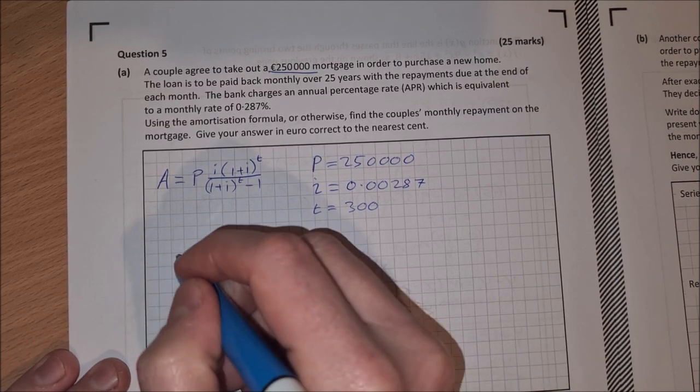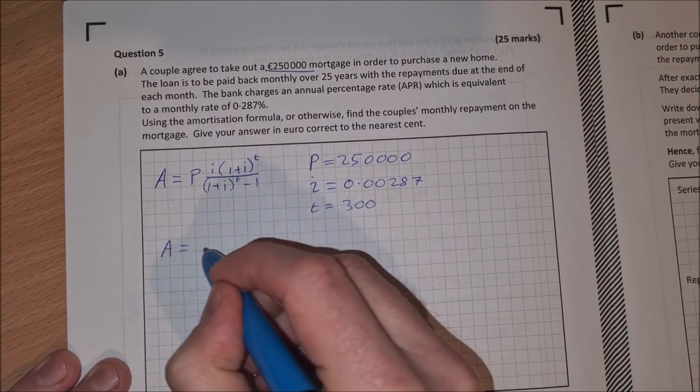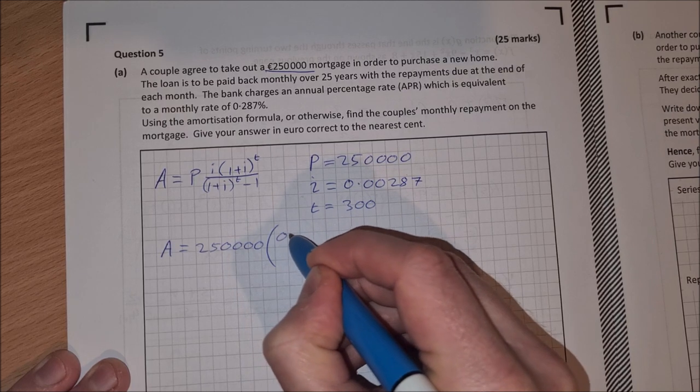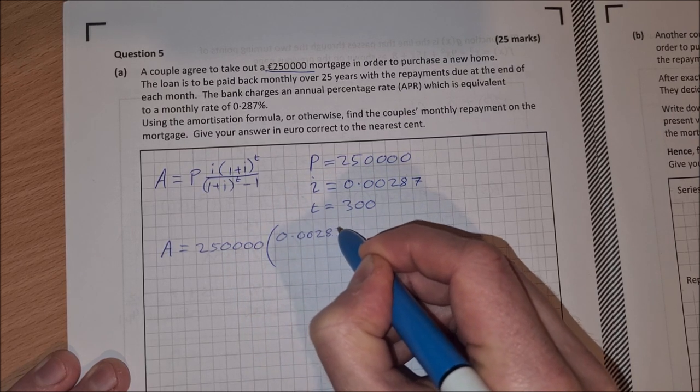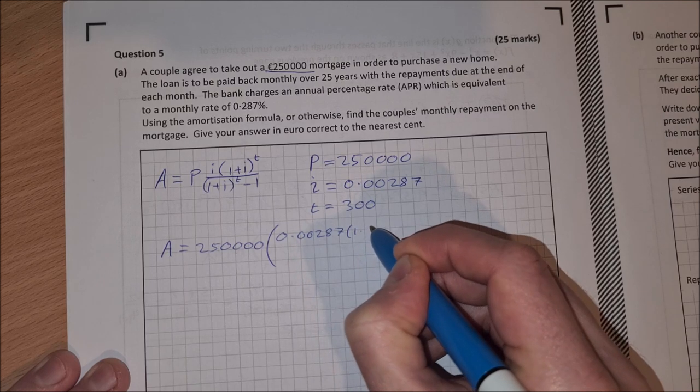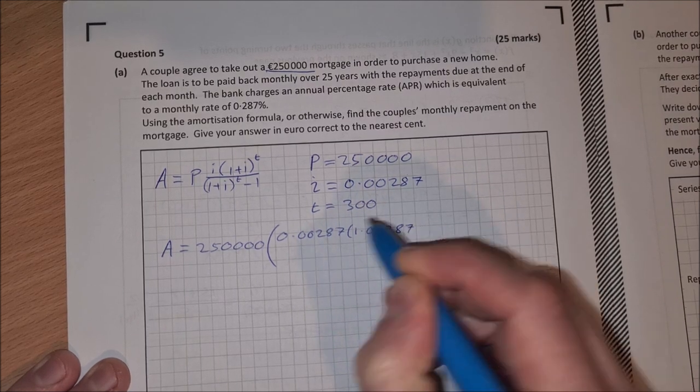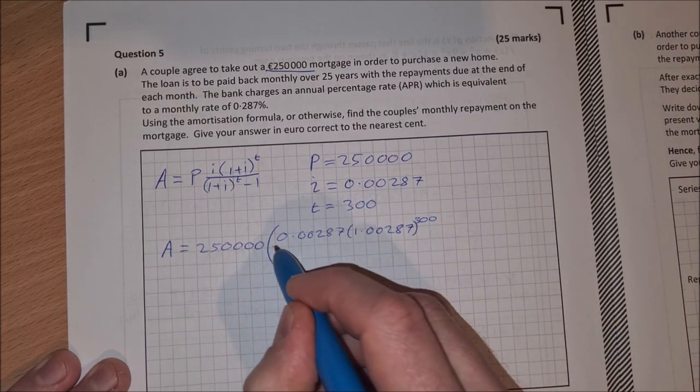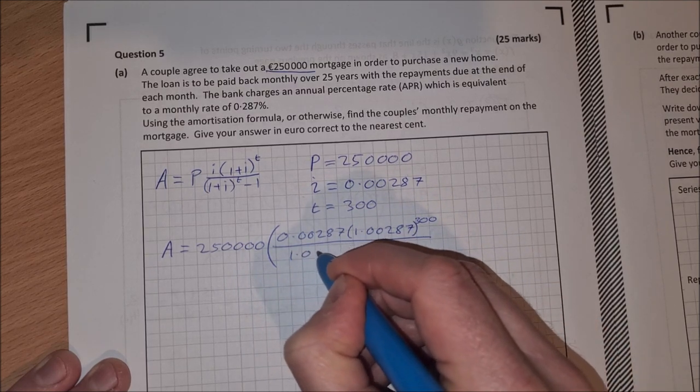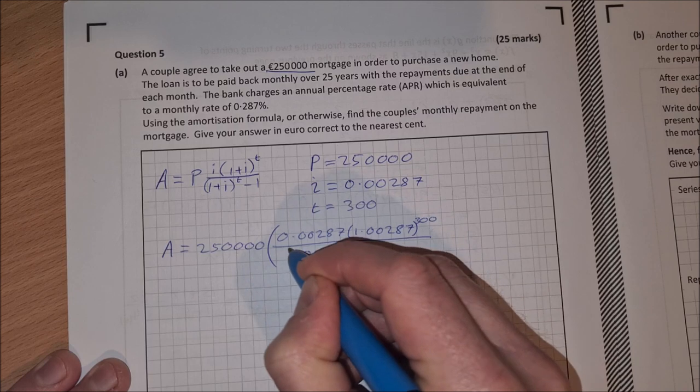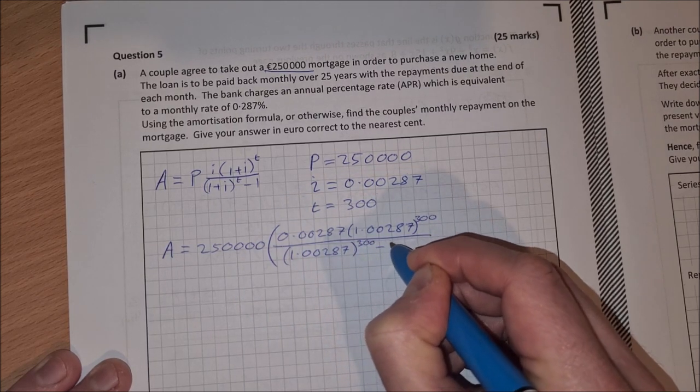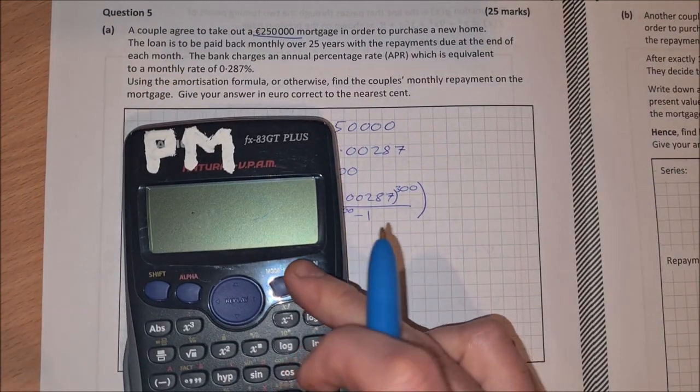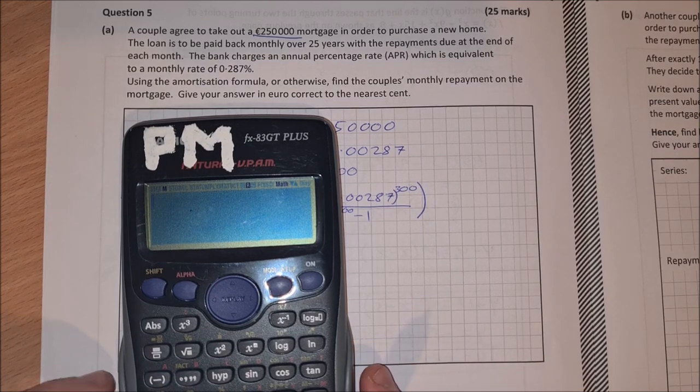So then filling in the formula, we have A equals P, which is 250,000 times 0.00287 times 1.00287, that's 1 plus I, that's to the power of 300, and then that's over 1.00287 to the power of 300 minus 1.